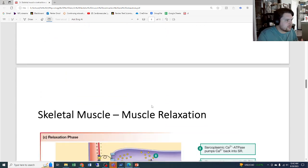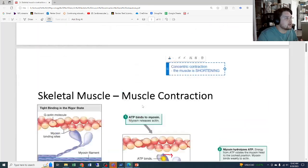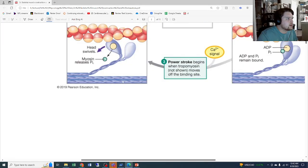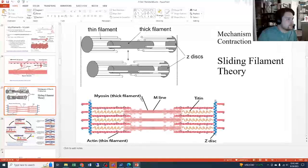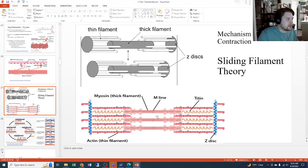The actin filament moves towards the M line. We remember that sarcomere—that M line is where the myosin is, and that actin gets pulled towards the M line.